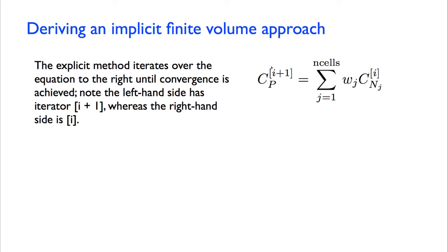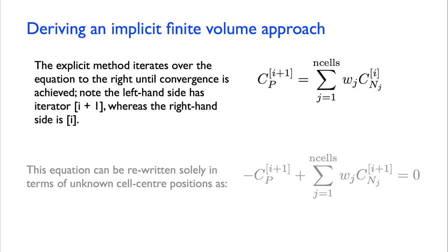We could consider an explicit method like this, where we calculate a new cell center position for cell P based on the old, or i. You can see i plus 1 on the left and i on the right, the old positions of neighboring cell centers. But to do it implicitly, we would say that the new position of cell center P depends implicitly on the new positions of the adjacent cells. So I've just moved this term to the left and multiplied by minus 1. And I've changed this index to be i plus 1 as well. So these are the unknowns.